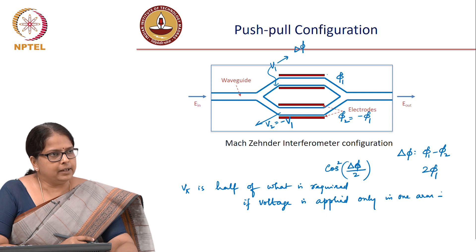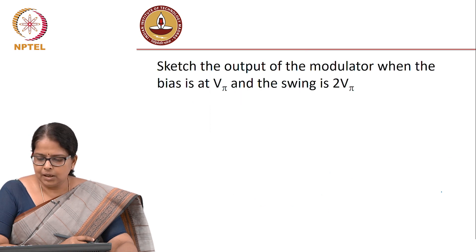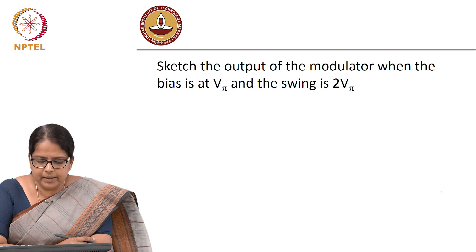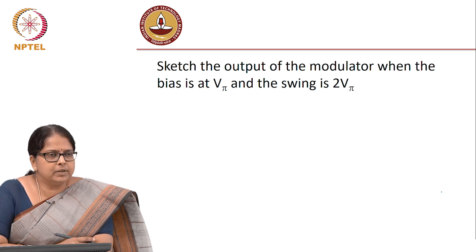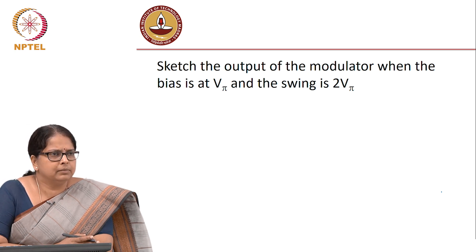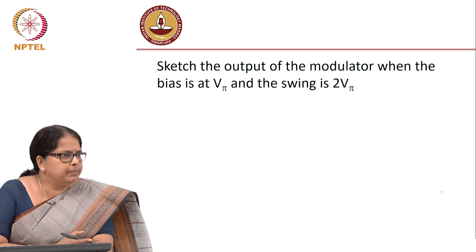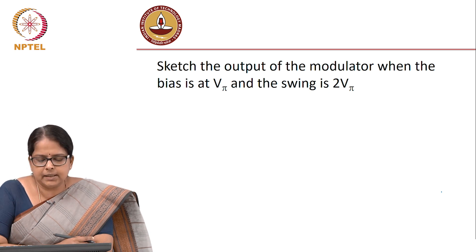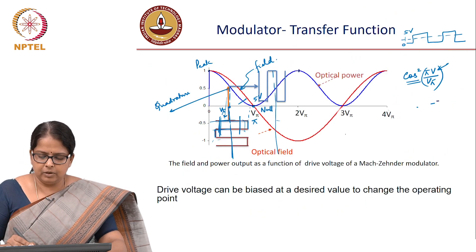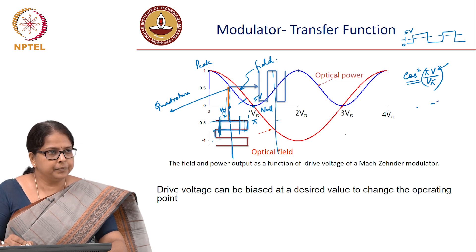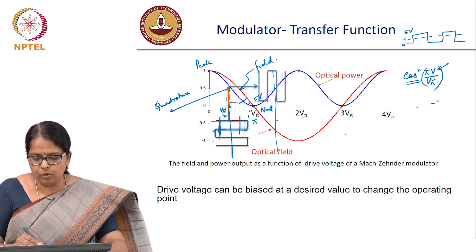This is for on-off keying. Now, sketch the output of the modulator when the bias is Vπ and the swing is 2Vπ — I want you to sketch the output field. It does not matter whether it is push-pull or single electrode; you can define everything in terms of Vπ. You are biasing it at Vπ and the swing is 2Vπ. Earlier the bias was Vπ/2; now push this bias to Vπ and swing it over 2Vπ.